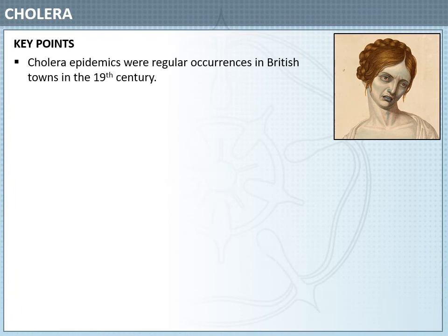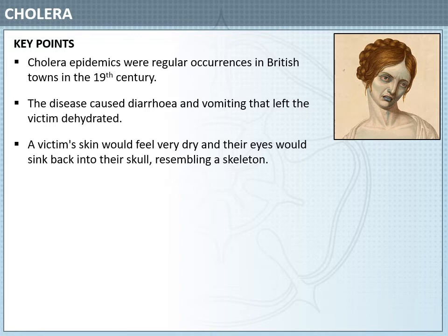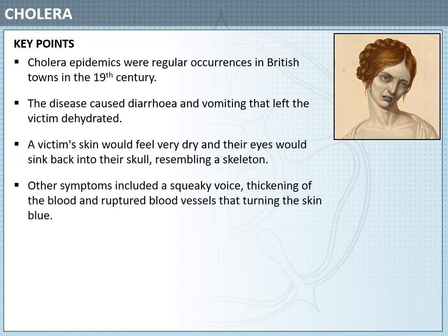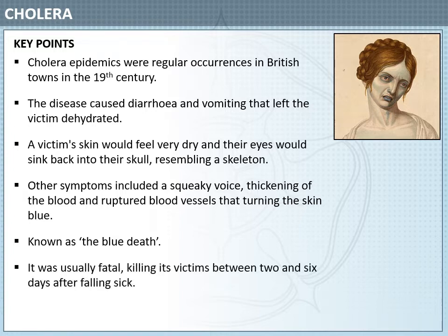It was these poor conditions that in part explain why cholera became such a prevalent disease in the 19th century. Cholera epidemics were regular occurrences in British towns in the first half of the 19th century. The disease caused diarrhoea and vomiting that left the victim extremely dehydrated. This would result in their skin feeling very dry and their eyes would sink back into their skull, resembling a skeleton. Other symptoms included a squeaky voice as their vocal cords were damaged, the thickening of the blood, and ruptured blood vessels that turned the skin blue — this is why it was known as the blue death. It was usually fatal and could kill its victims anywhere between two and six days after falling sick.